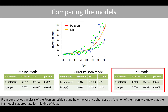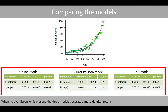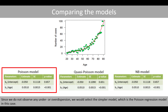From our previous analysis of the Pearson residuals and how the variance changes as a function of the mean, we know that the negative binomial model is appropriate for this kind of data. Suppose we instead fit the three different models to data where the variance is approximately equal to the mean. When no overdispersion is present, the three models generate almost identical results, and the standard errors are more or less identical for the three models. Since we do not observe under- or overdispersion, we would select the simpler model, which is the Poisson regression model in this case.